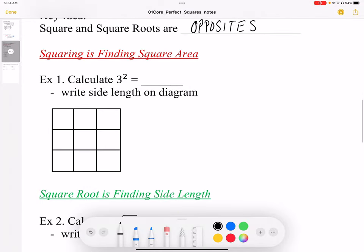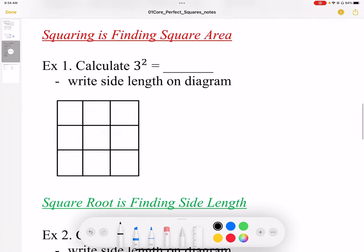Squaring is finding area. When it says calculate 3 squared, what does that actually mean? It means that we have a side length 3, we're going to square it, and we're going to get area. So here is my picture that I'm going to use for 3 squared.